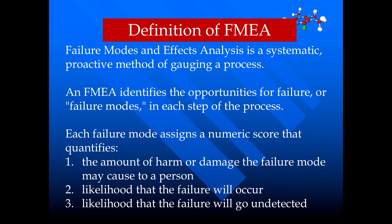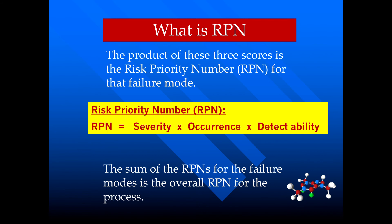The score also reflects the likelihood that the failure will occur, and the likelihood that the failure will go undetected. The Risk Priority Number is the product of severity, occurrence, and detectability.